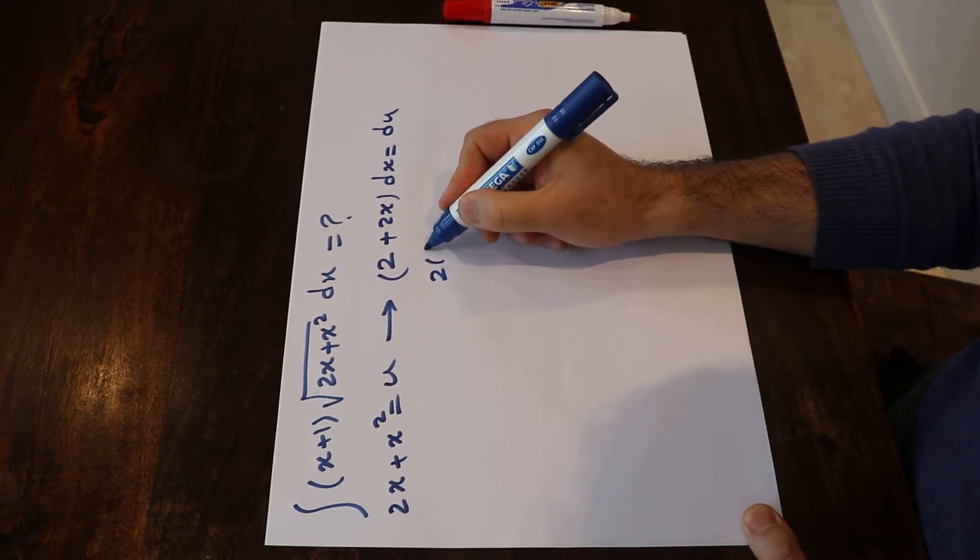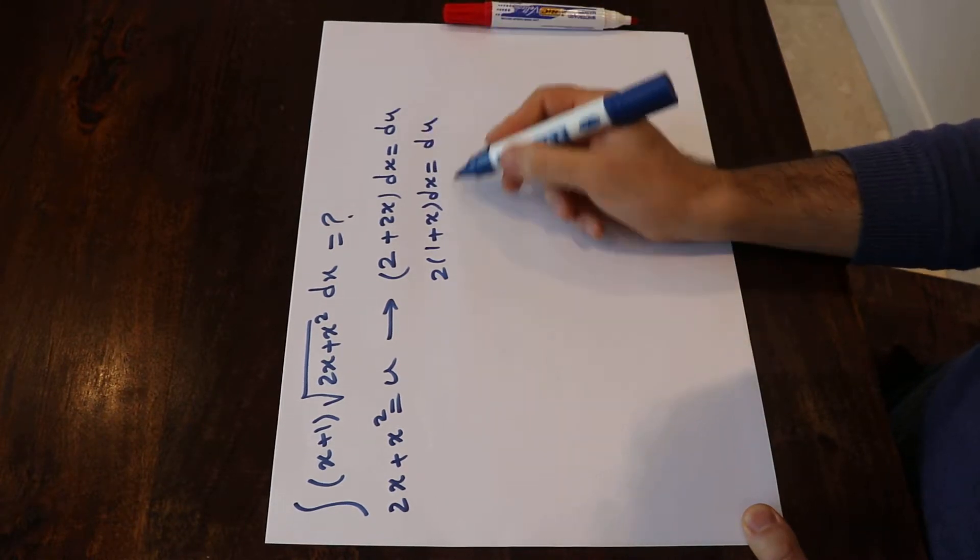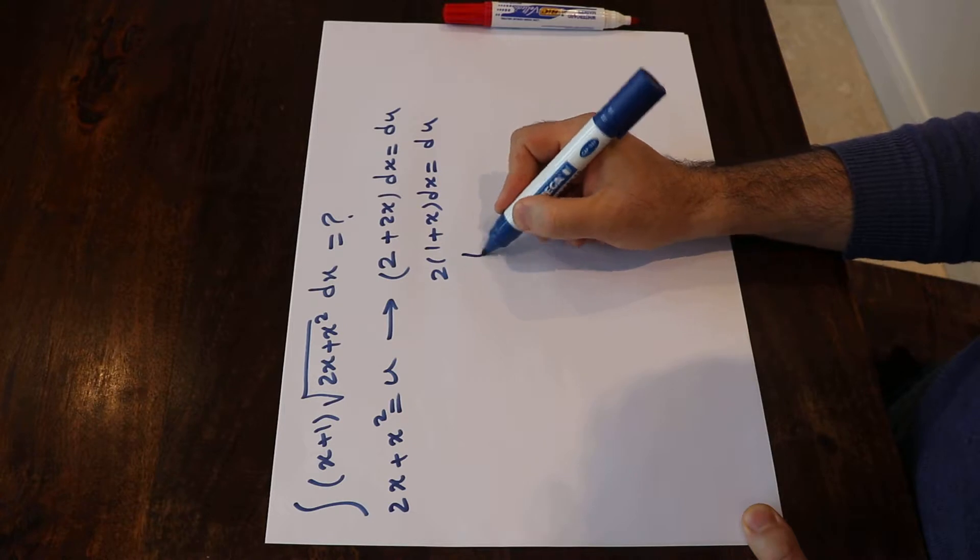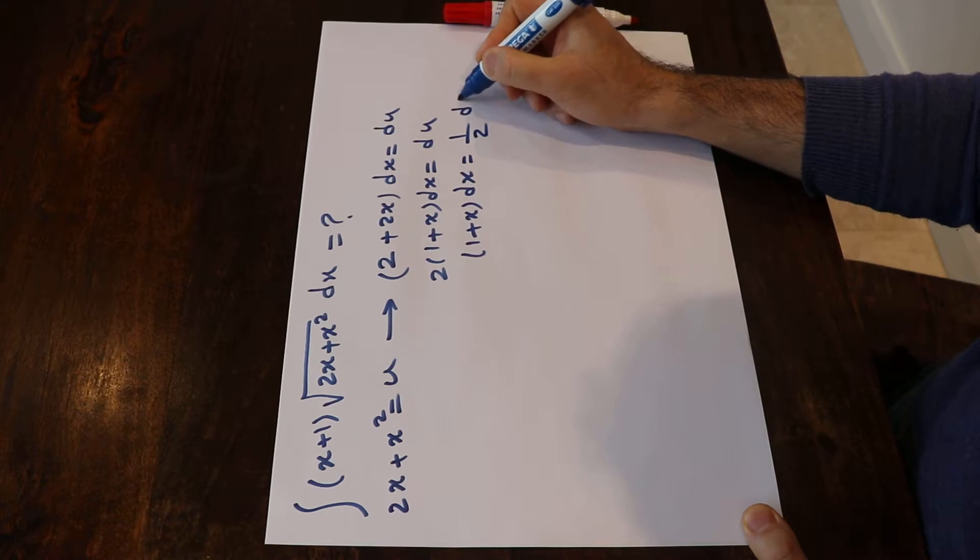Or 2(1+x)dx is equal to du. In other words, you can write (1+x)dx will be equal to ½du.